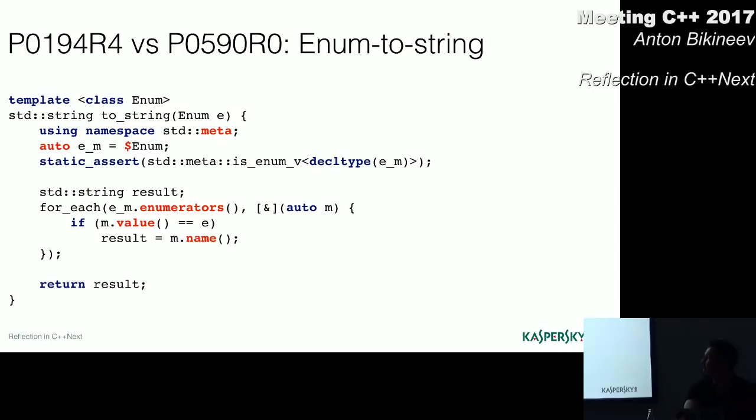Here again, we reflect the variable person of type string. Print its name. Reflect the type of the variable. And do reverse transformation using the typename keyword. You remember the example of the enumeration to string conversion from the previous example. Now it looks simpler. With the dollar sign, we reflect this meta object that refers to enumeration type.